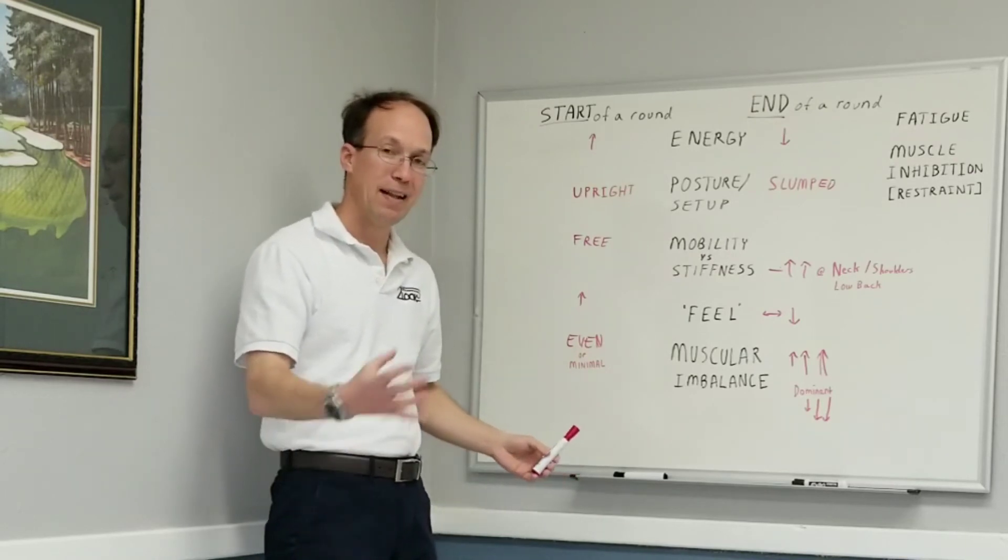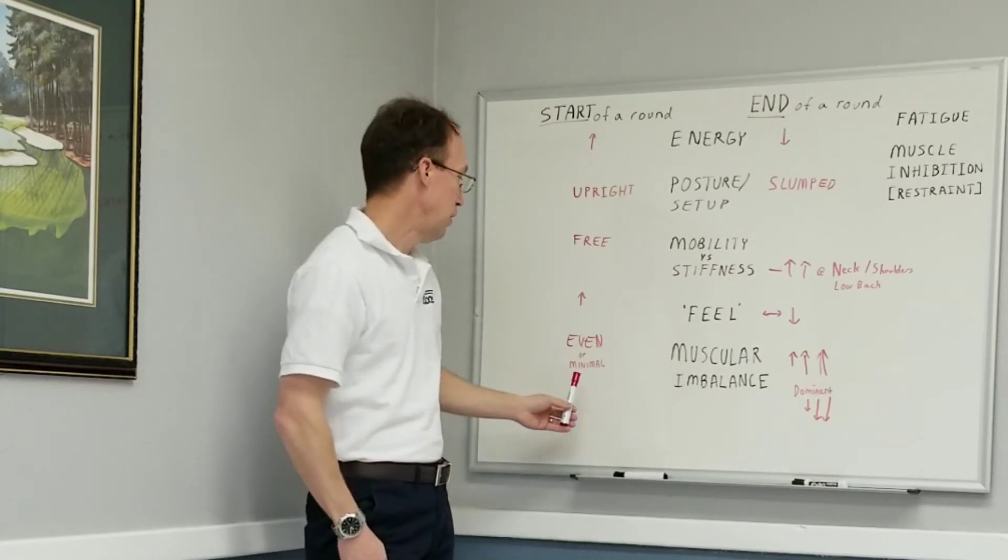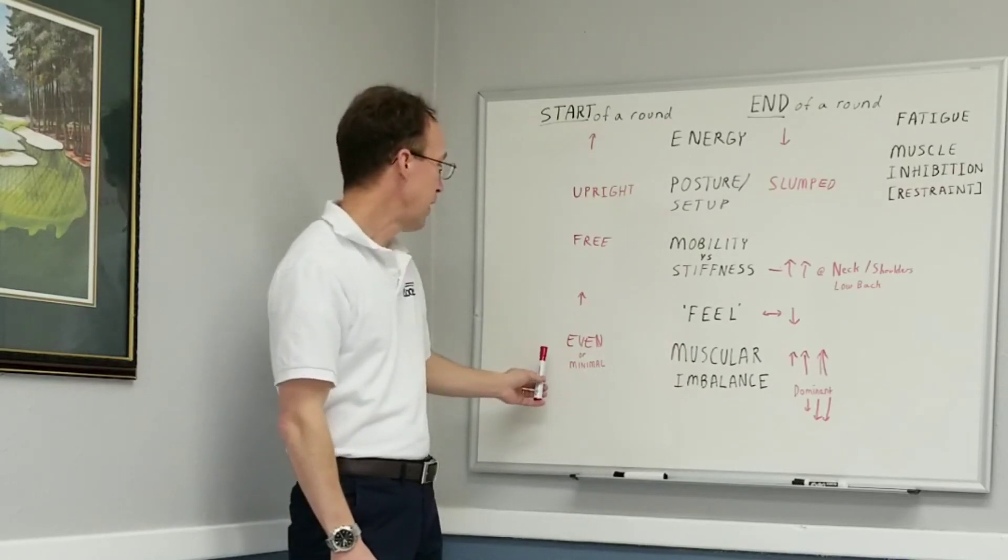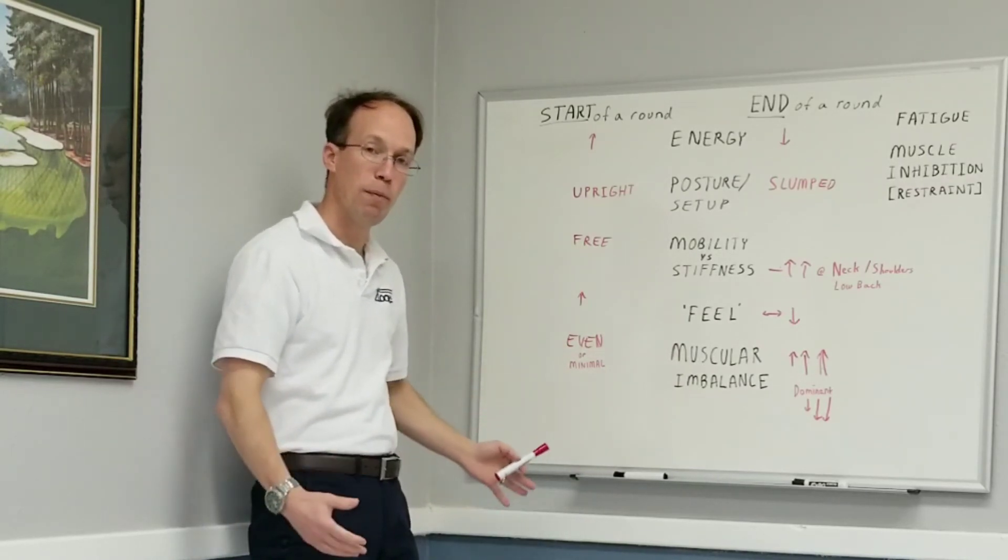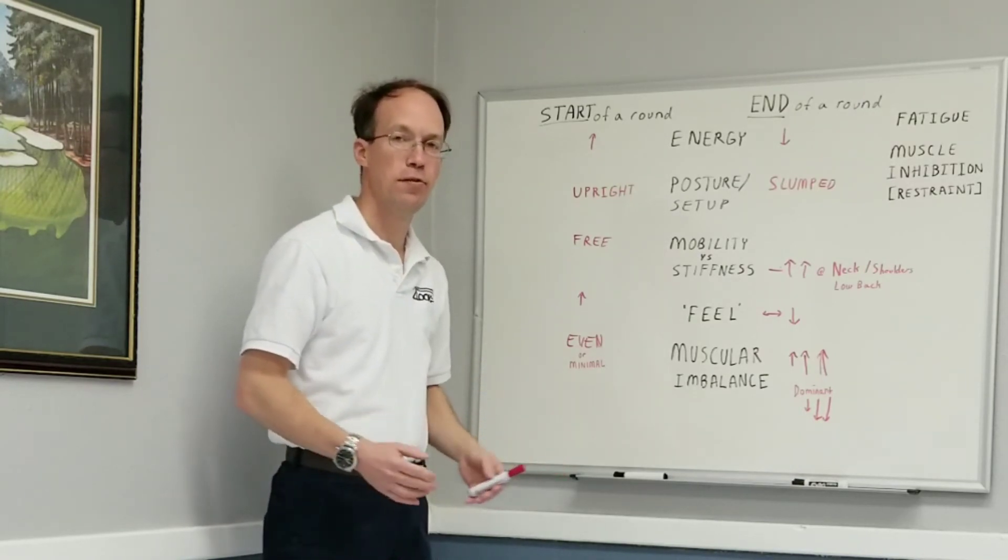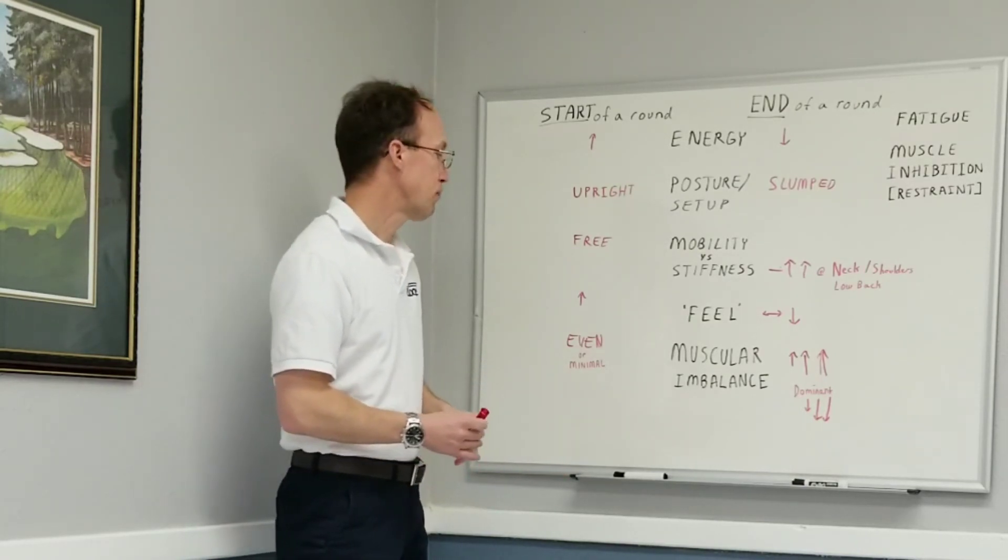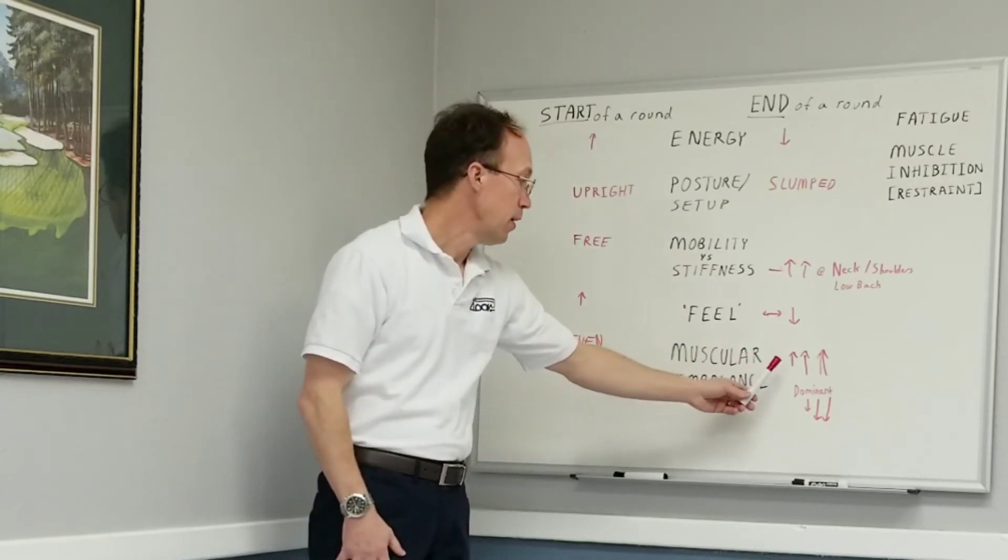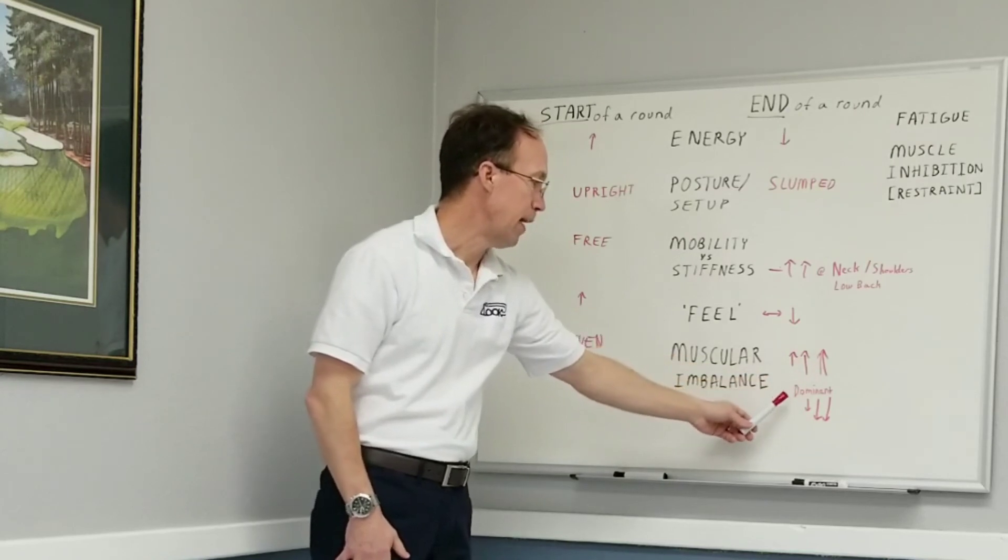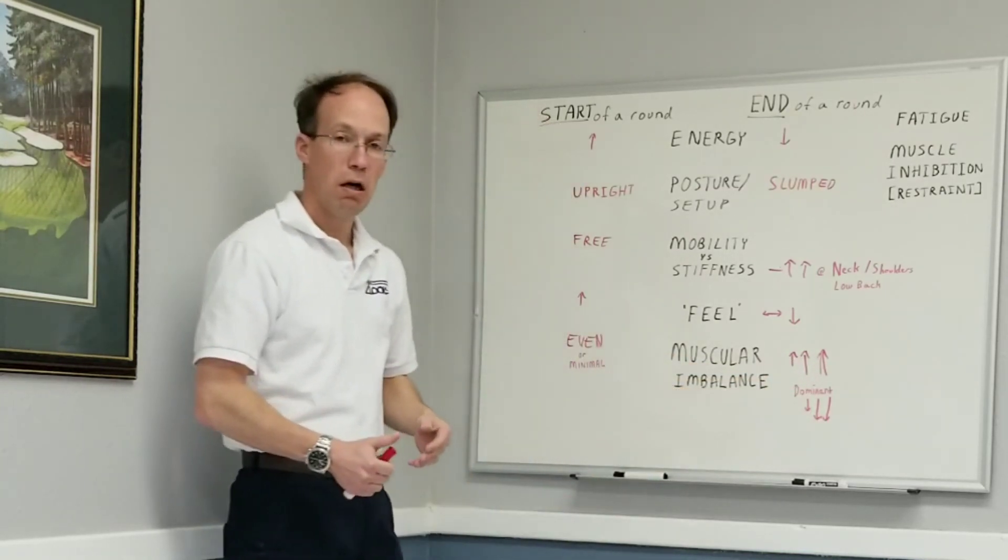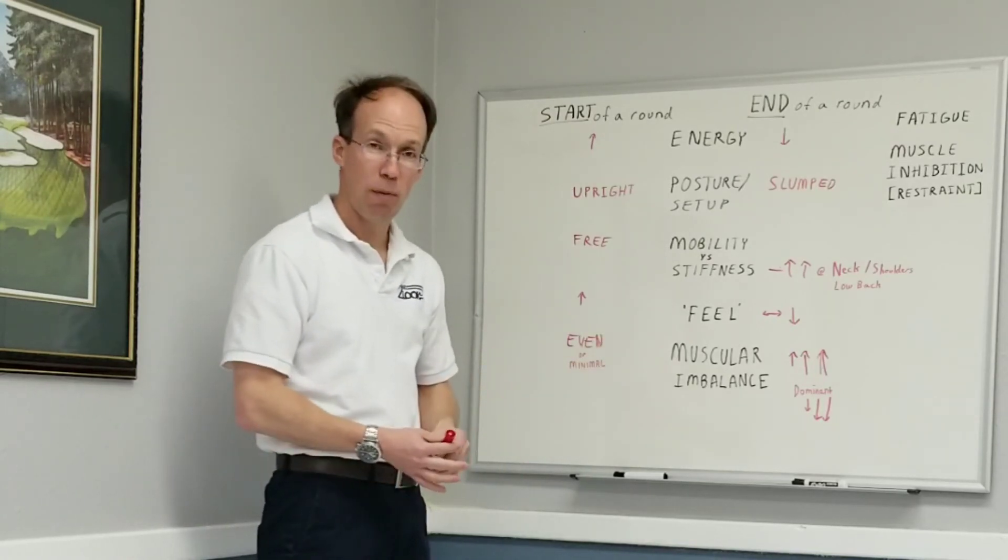So what's really going on at the root of this is a muscular imbalance. At the start of a round or start of a performance, when you're rested, you will appear even or have minimal differences side to side. By the end of a round, or as you go along, the actual imbalance increases and your dominant side, which is what tends to be where this shows up, will actually reduce in performance.